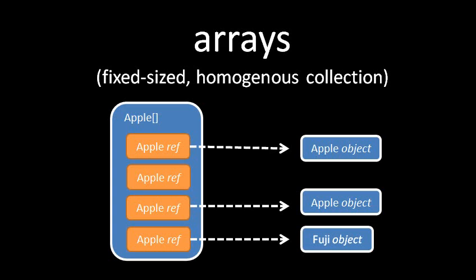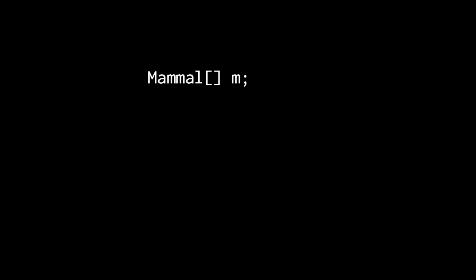Like classes and interfaces, arrays are reference types. So when we create a local variable m of type mammal array, then m is a reference. To then create an actual mammal array object, we use the new operator, but instead of putting parentheses after the class name, we put the subscript operators, the square brackets, and inside we put the size of the array. So here we are creating a new mammal array with three elements, and assigning it to m.